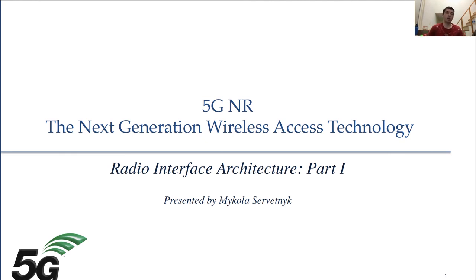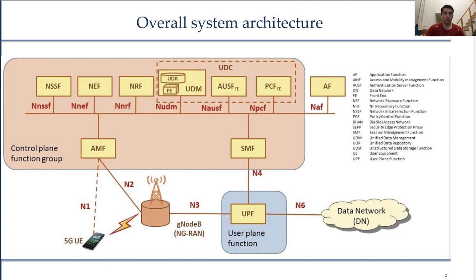We will take a brief overview of the overall architecture of the NR radio access network and the associated core network, followed by descriptions of the radio access network user plane and control plane protocols. In parallel to the work on the new radio access technology in 3GPP, the overall system architectures of both the RAN and the core network — referred to as TN in this presentation — were revisited, including the split of functionality between the two networks.